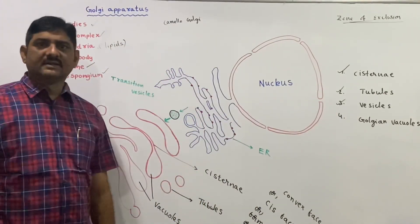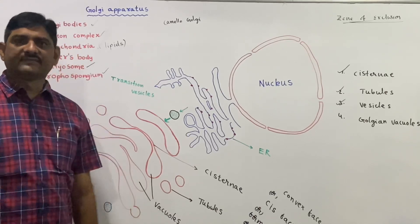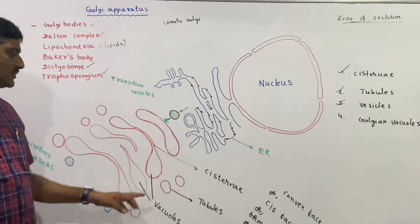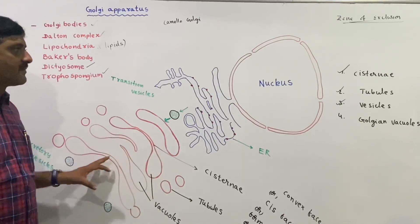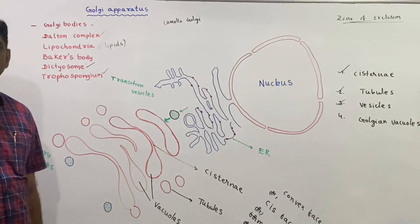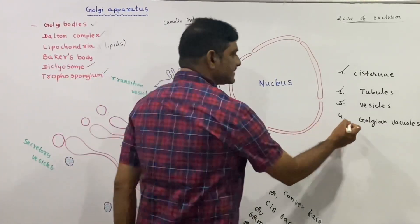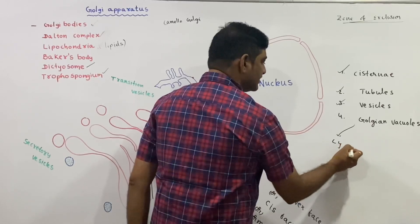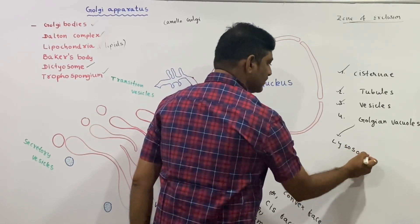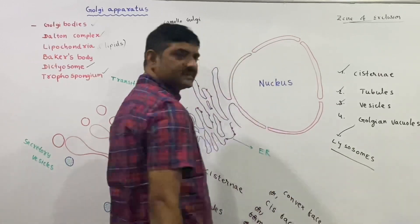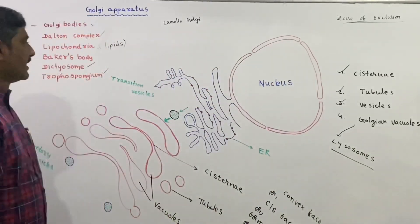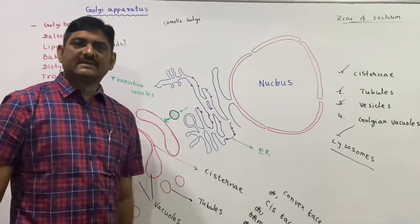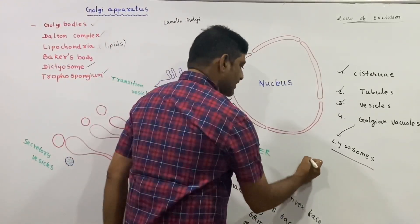Golgi vacuoles are large spherical-shaped structures associated with tubules. Some of the Golgi vacuoles act like lysosomes. This is the fourth component of the Golgi apparatus.